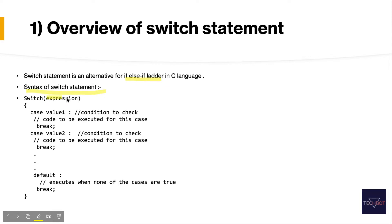In switch statements, first we have an expression. This expression is evaluated with all the cases present, and if a case is true, the code in that case will be executed. We give input to the switch statement as an expression, that expression is evaluated, and if it is true the code written there will be executed. After that there is a break statement — we write break because if one condition is true we don't need to check all other conditions. It will break out of the switch statement and we will get the output present in that case.